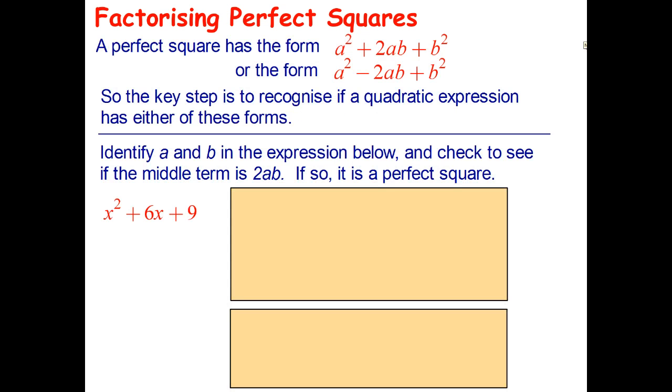So in particular, a perfect square either looks like that or looks like that. And if an expression does fit either of those patterns, we can then write it as a perfect square. So the first step is trying to figure out, for example, does this fit that pattern just there? So here's how you have to think about it.